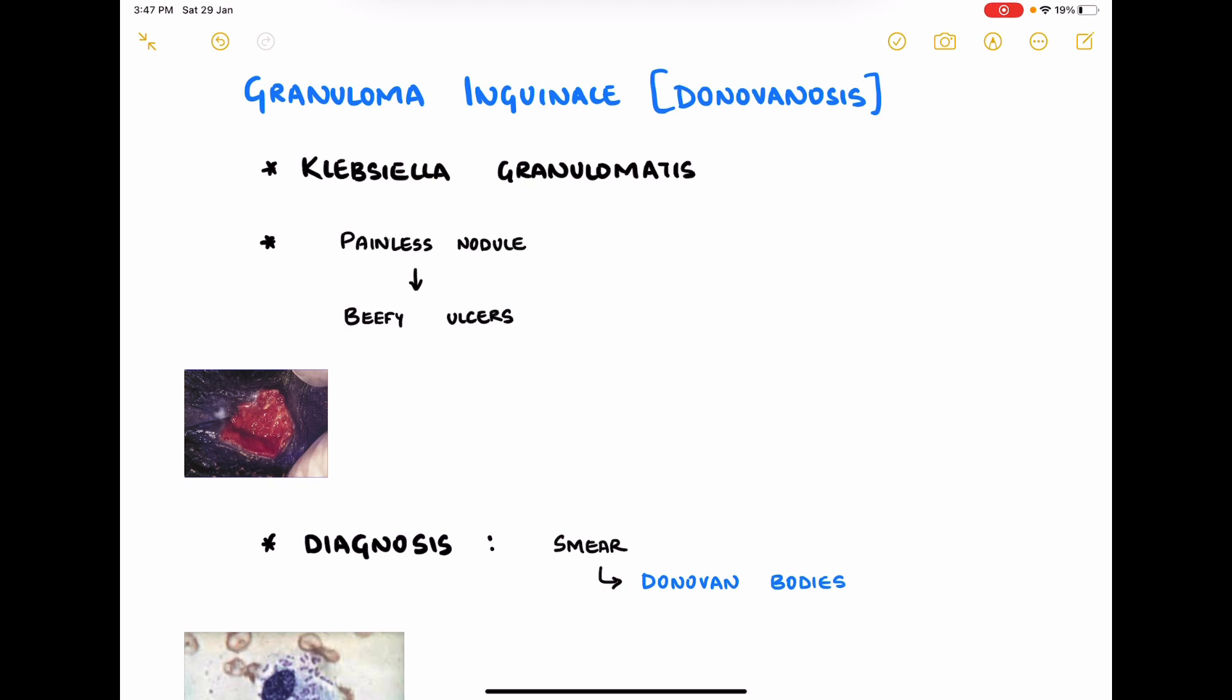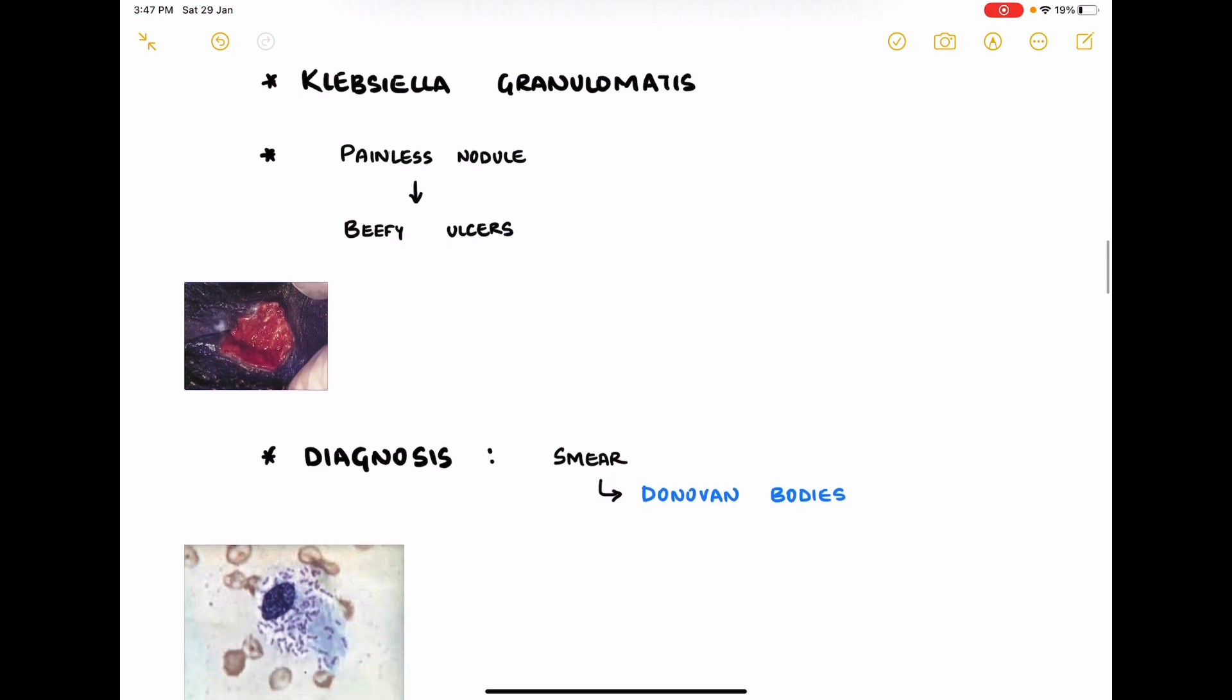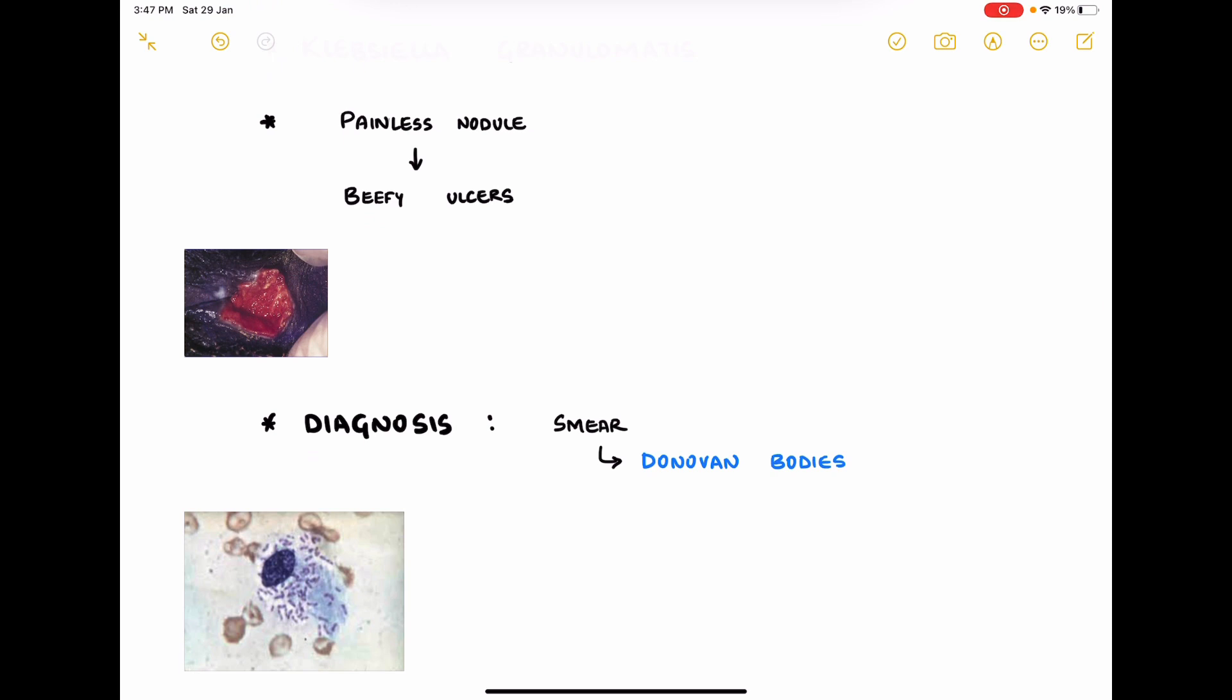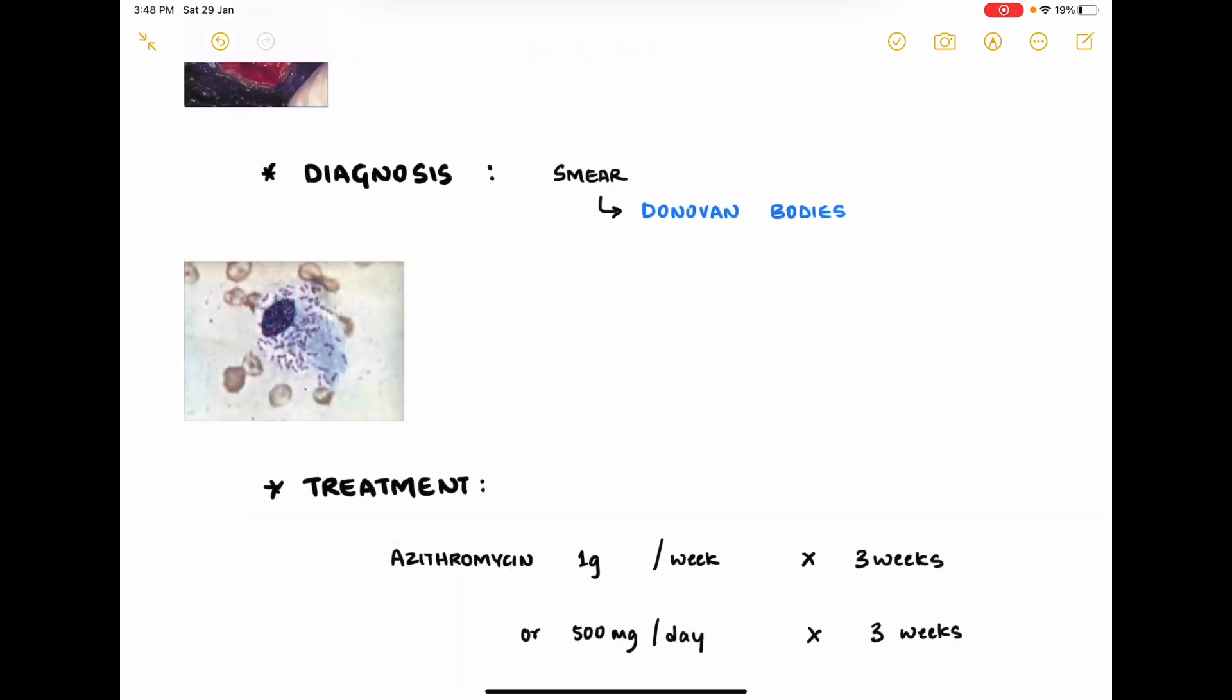Diagnosis is done by taking a smear, and in the smear you can see Donovan bodies, which is the rod-shaped bacteria within the phagocytes. The second picture shows the Donovan bodies. Treatment for donovanosis includes azithromycin 1 gram given once a week for three weeks, or 500 mg of azithromycin per day for three weeks.